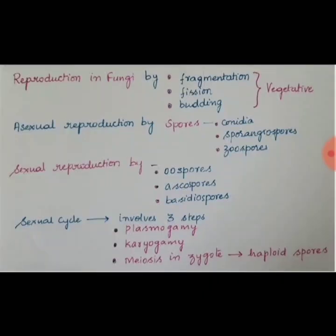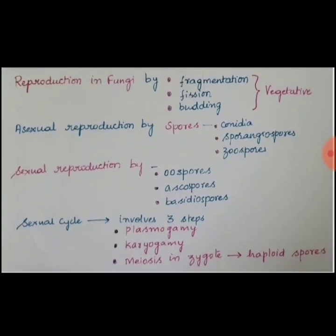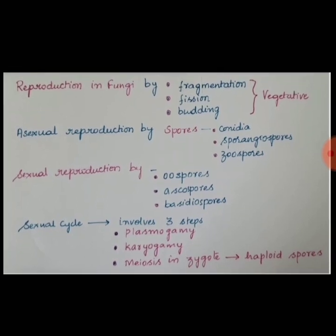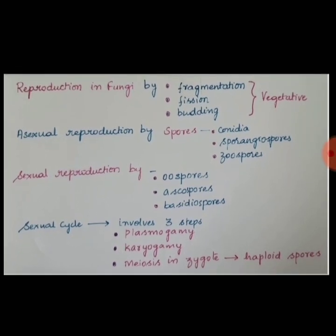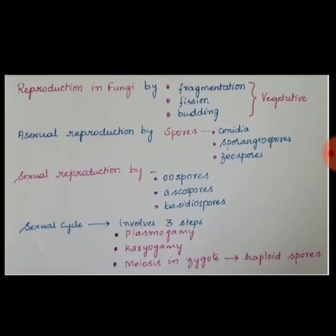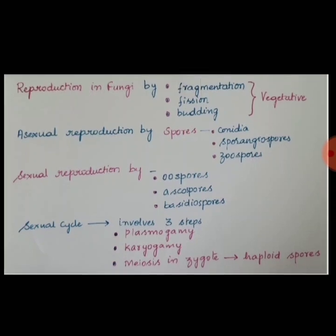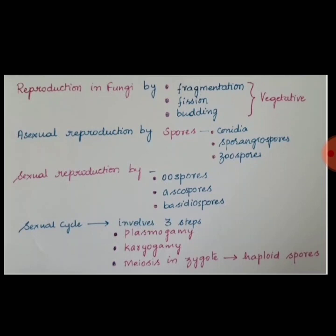Reproduction in fungi may occur either sexually or asexually. Asexually it may occur through processes such as fragmentation, fission or budding, or through spores like conidia, sporangiospores and zoospores, depending upon the type of fungi. Sexually it may occur through spores like ascospores, oospores or basidiospores.